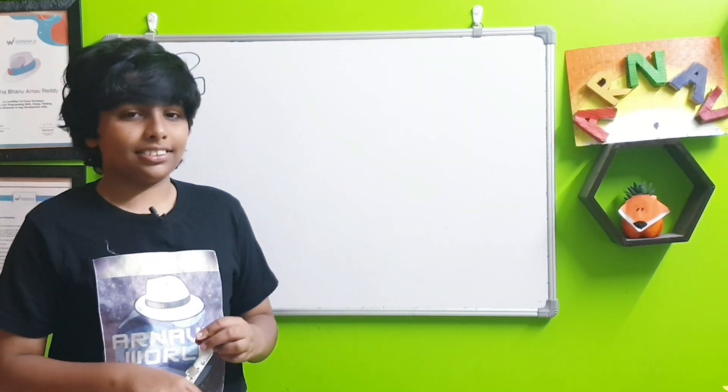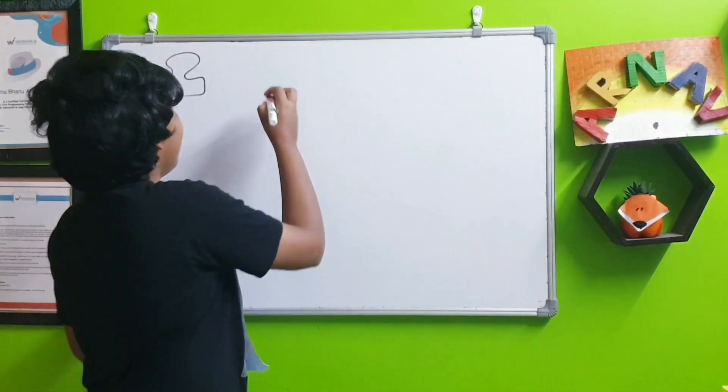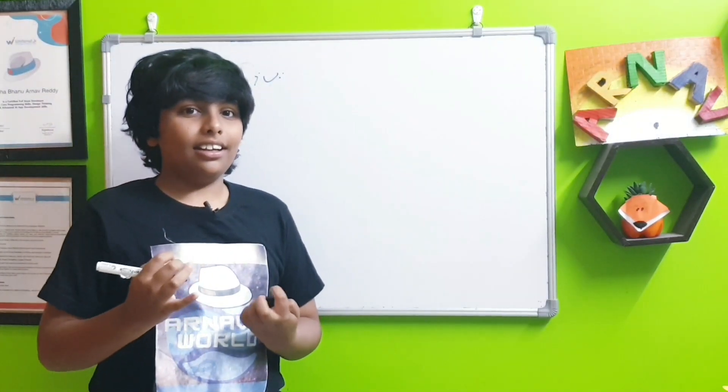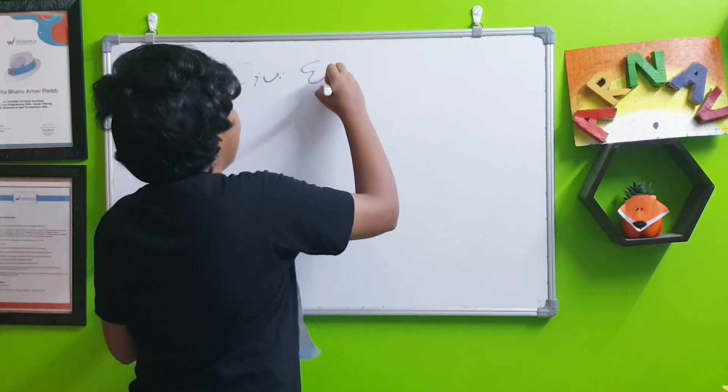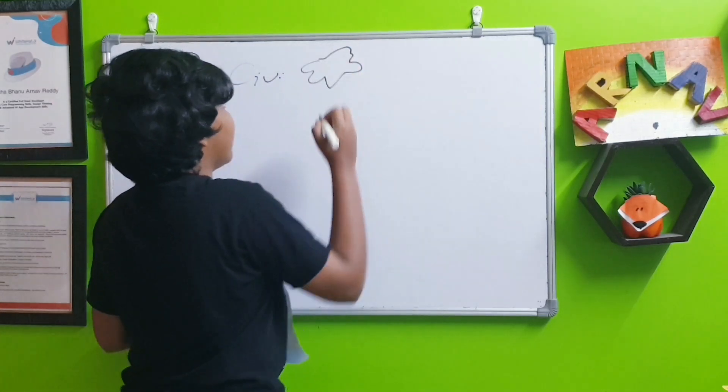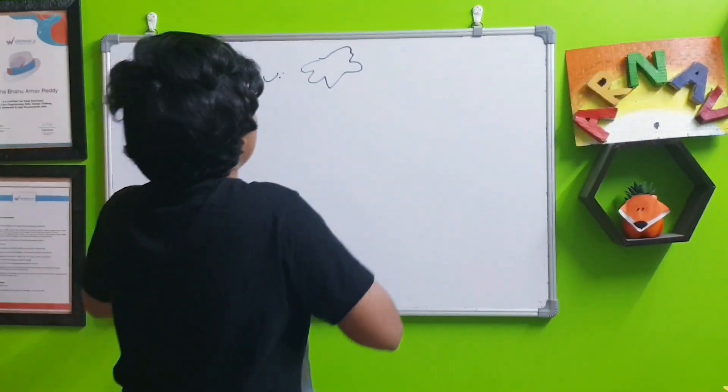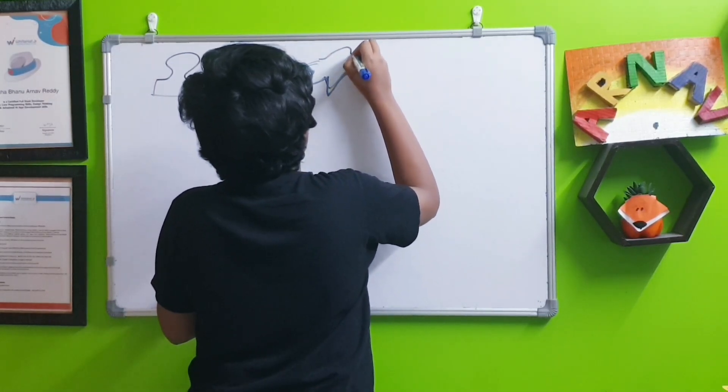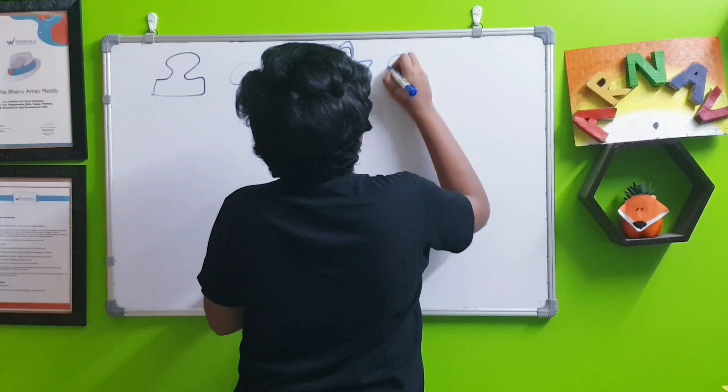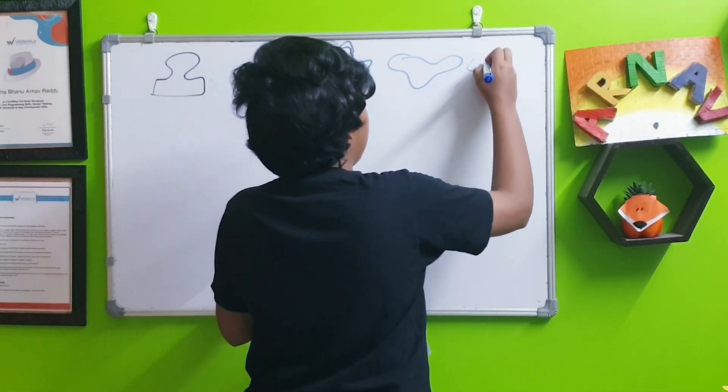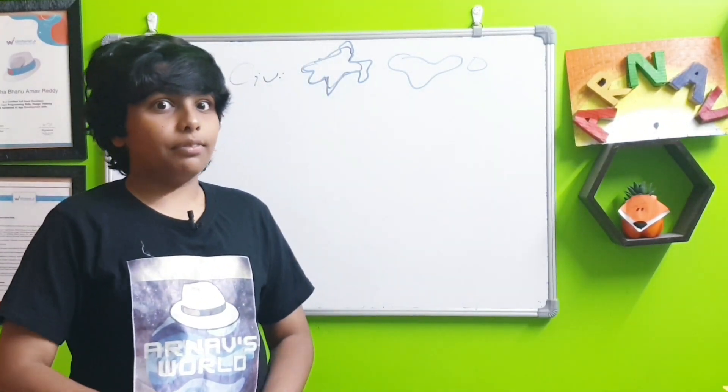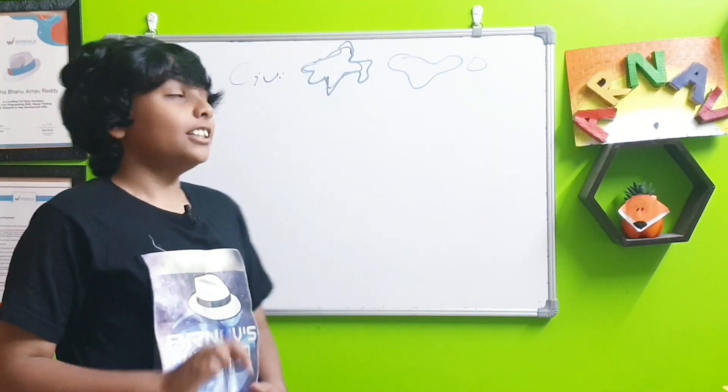First we just started with civilizations explained. Then we started discussing about pretty much a lot of civilizations. The Indian... Why did I write India like this? I'll use another color. So India, the Chinese civilizations, the Norte Chico civilizations, the Greek civilizations, the Asian civilizations. There were a lot of civilizations.